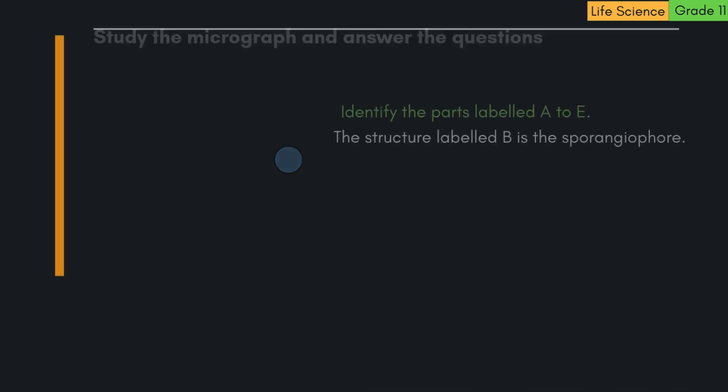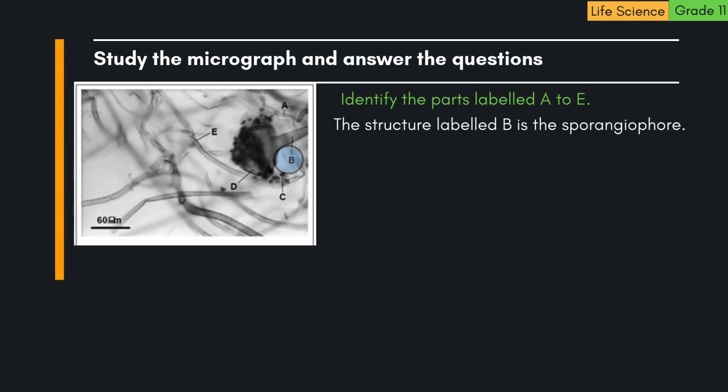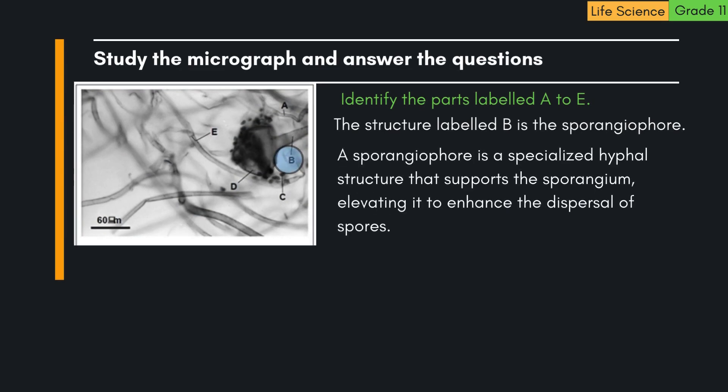2. The structure labelled B is the sporangiophore. A sporangiophore is a specialised hyphal structure that supports the sporangium, elevating it to enhance the dispersal of spores.